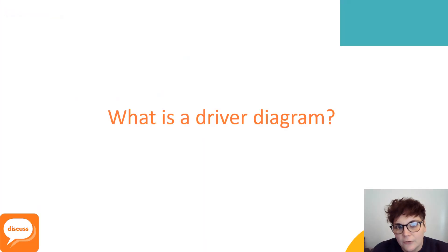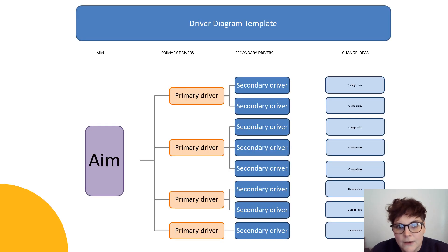So what is a driver diagram? A driver diagram is a simple visual overview of your project. It helps you break it down into small, manageable change ideas that are going to help you reach your aim. Here's an example of a driver diagram and a template. You begin with setting an aim, then think about what you need to achieve that aim, and break it down further until you have a manageable change idea. It's a really good visual display that everybody can connect with.